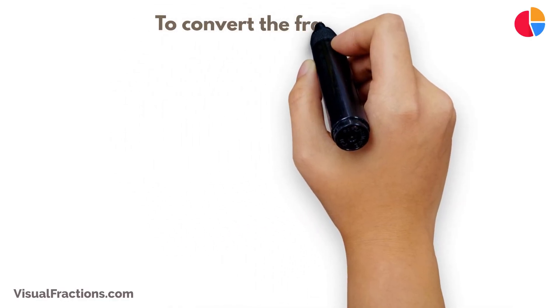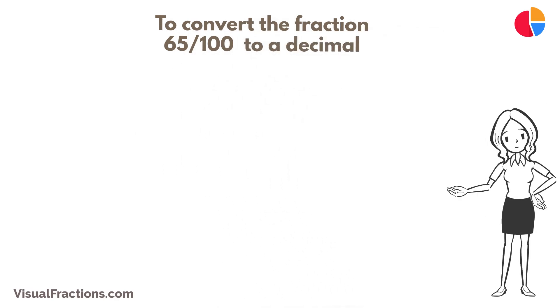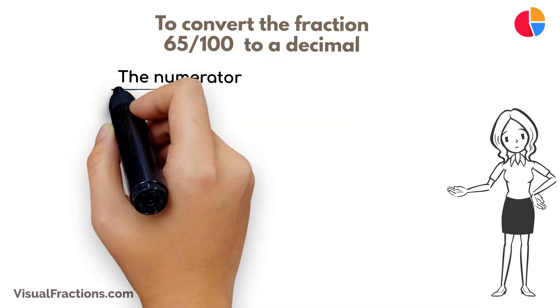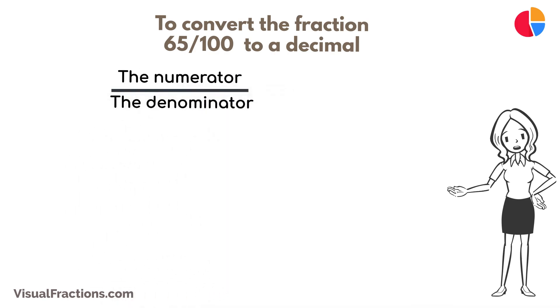To convert the fraction 65 one hundredths to a decimal, all we need to do is divide the numerator, the top number, by the denominator, the bottom number. So, we simply divide 65 by 100. The answer we get is 0.65.